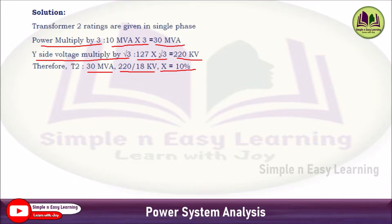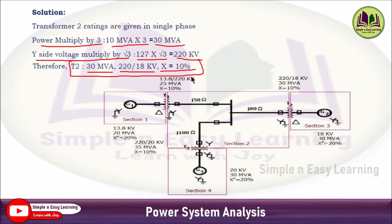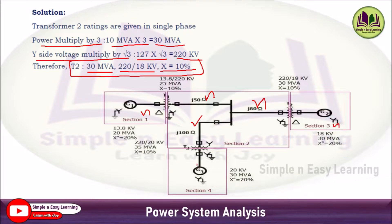You need to multiply root 3 for only the star side voltage, not the other side. Now you can divide the single line diagram into sections: generator G1 and transformer T1 LT side form section 1; transformer T1 HT side, T2 HT side, and T3 HT side with all transmission lines form section 2; LT side of T2 and generator G2 form section 3; LT side of T3 and generator G3 form section 4.